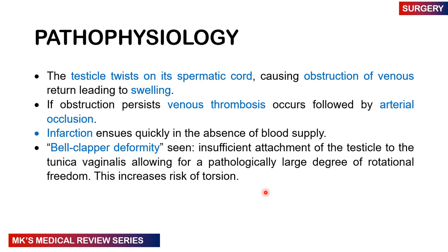The pathophysiology: the testicles are twisting on their own spermatic cord, causing obstruction of venous return, leading to swelling. This obstruction of venous return can progress to thrombus formation — venous thrombosis — and eventually arterial occlusion. Once arterial occlusion occurs, this leads to death of the tissue, which is known as infarction, due to insufficient blood supply. We may sometimes see a bell clapper deformity where there is insufficient attachment of the testicle to the tunica vaginalis, allowing a pathologically large degree of rotational freedom, which increases the risk of torsion.